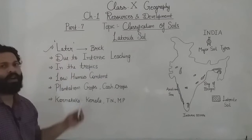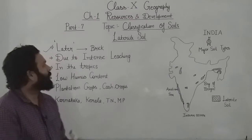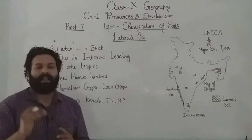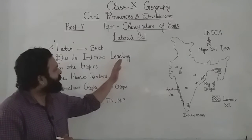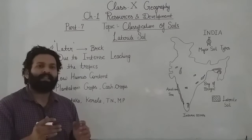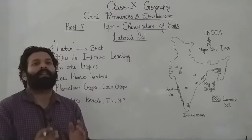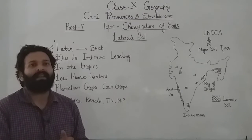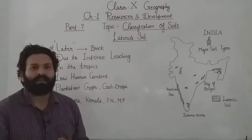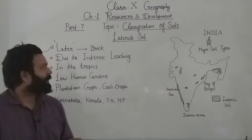Regarding the formation of this soil — this soil is formed due to the process of intense leaching. 'Intense' means very extreme in degree. 'Leaching' means the loss of water-soluble plant nutrients from the soil. So intense leaching means extreme loss of water-soluble nutrients, leaving insoluble matter like iron and aluminum oxide hydroxide — that is why it is used to make bricks.